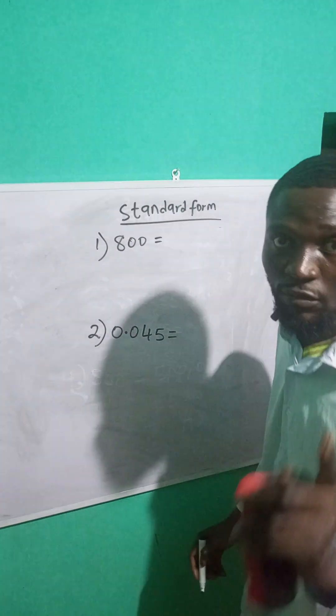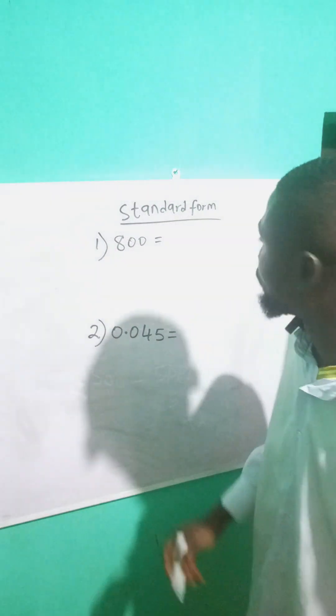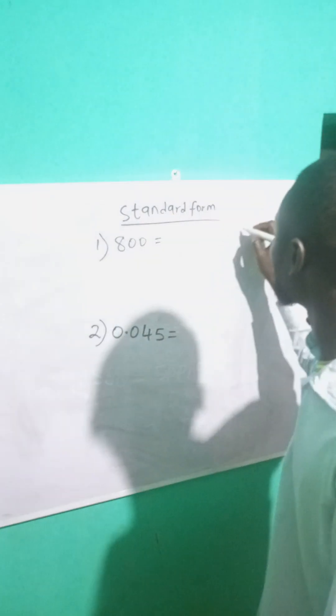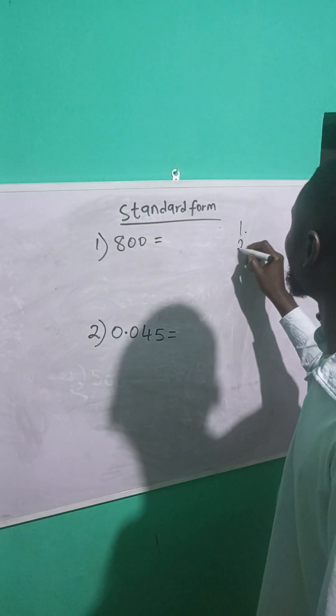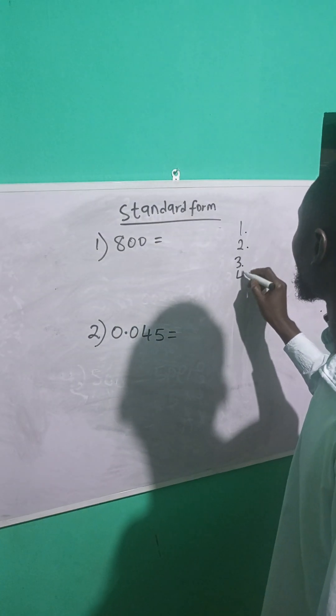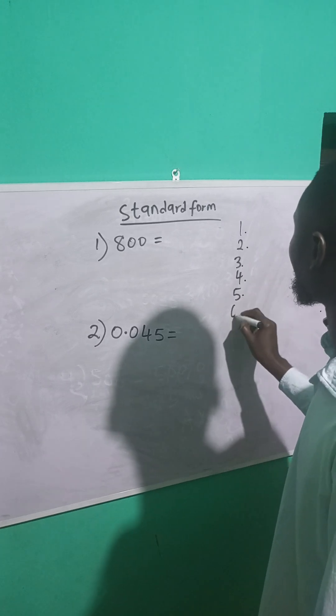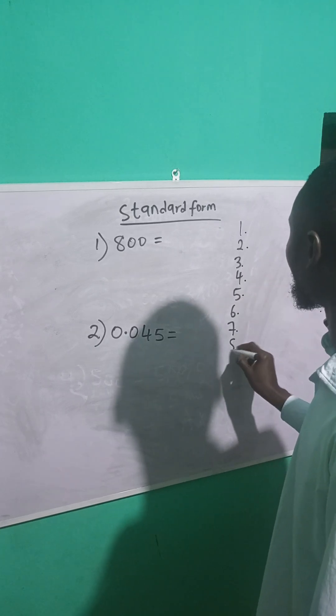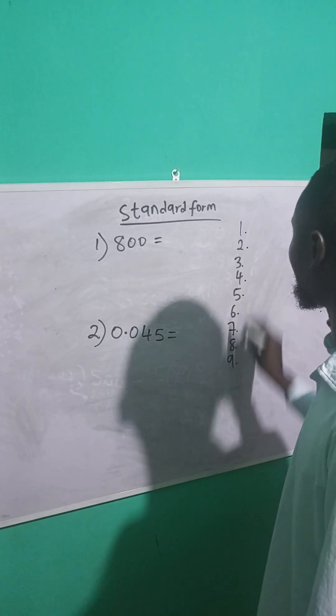So let's just write these numbers in standard form. Now note something, when you're writing a number in standard form, your answer must be within one to nine - one point or two points or three points or four points or five, six, seven, eight, or nine points.